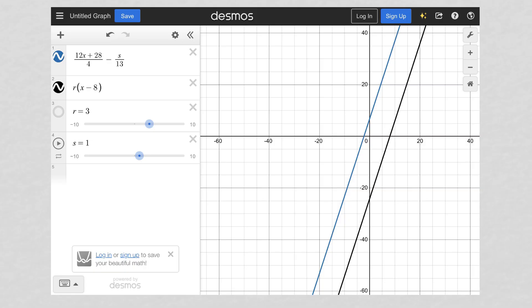I just moved it over until they looked parallel to me. And that started at or that led me to R equals three. So I zoomed in, zoomed out until they looked parallel where I could see they were not crossing ever. And that led me to R equaling three.